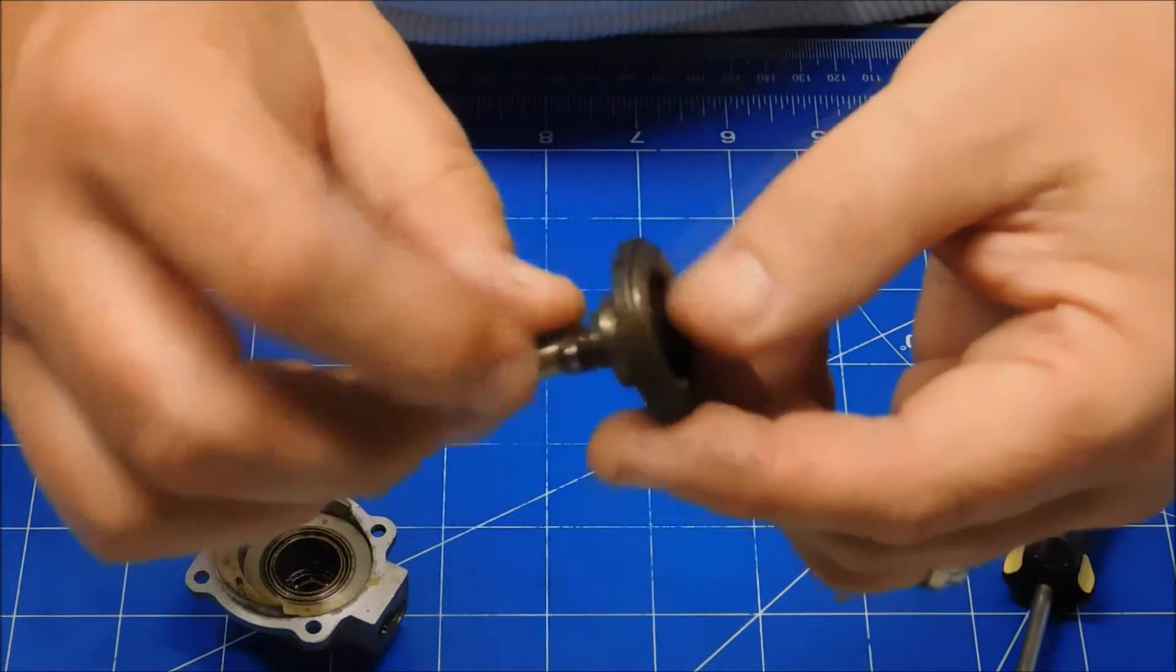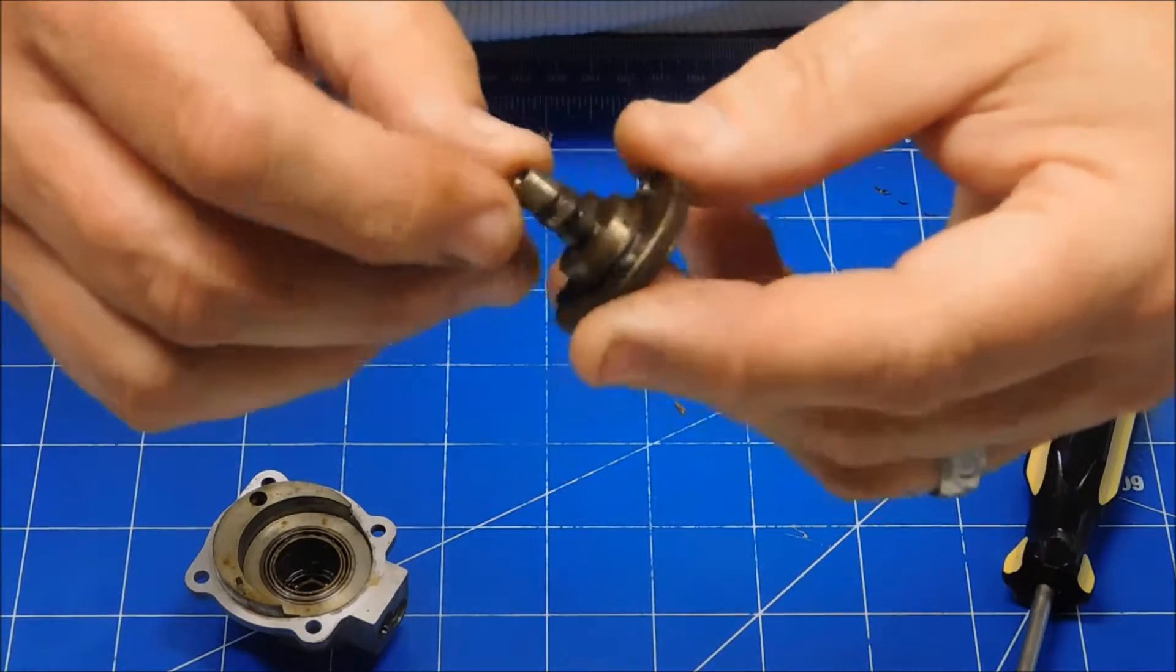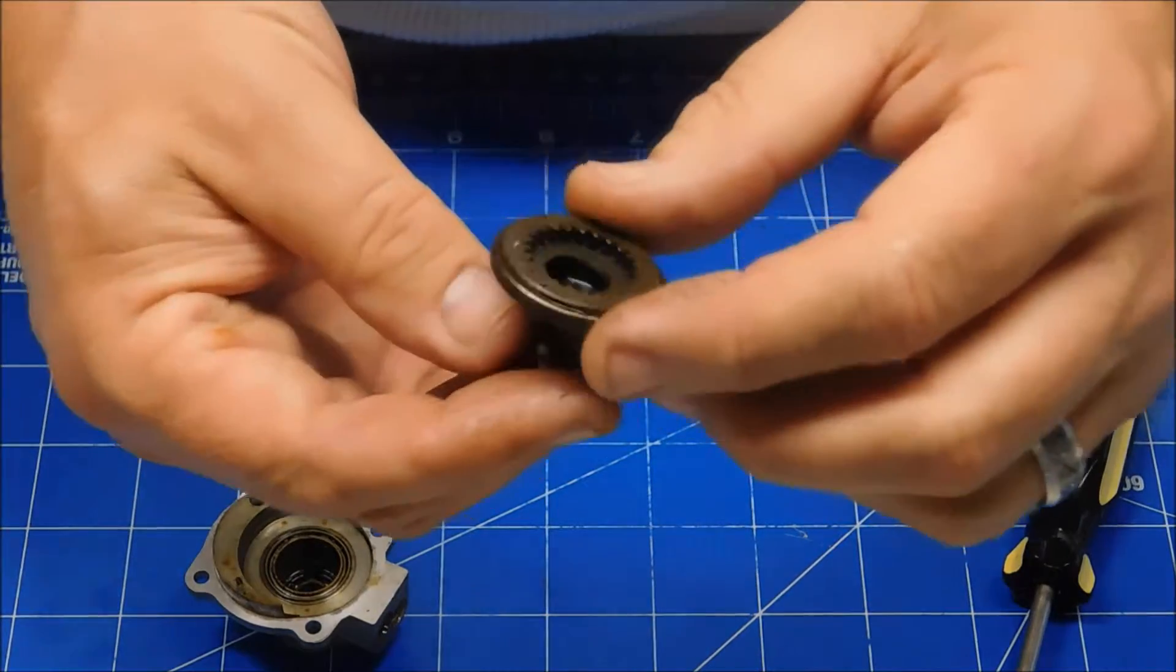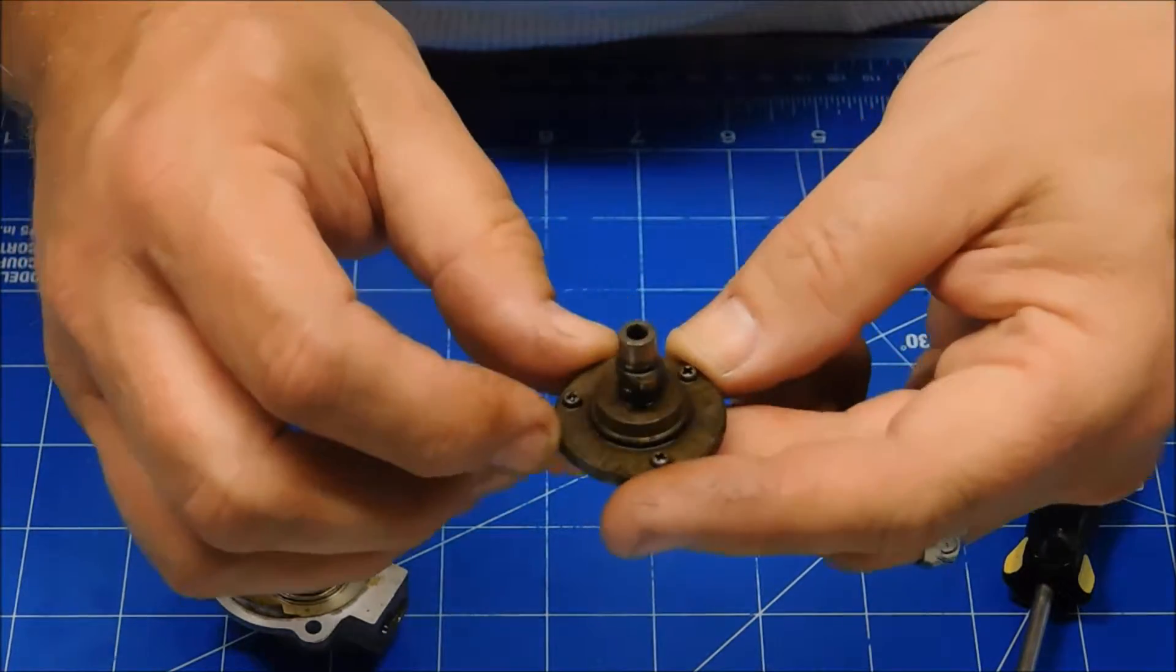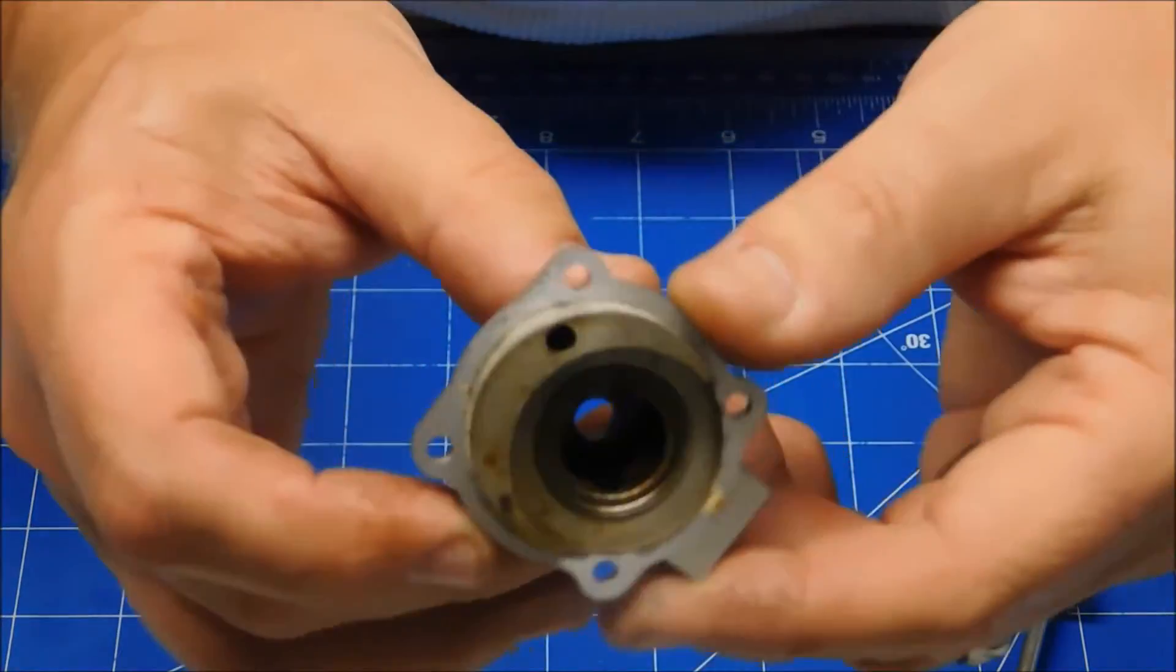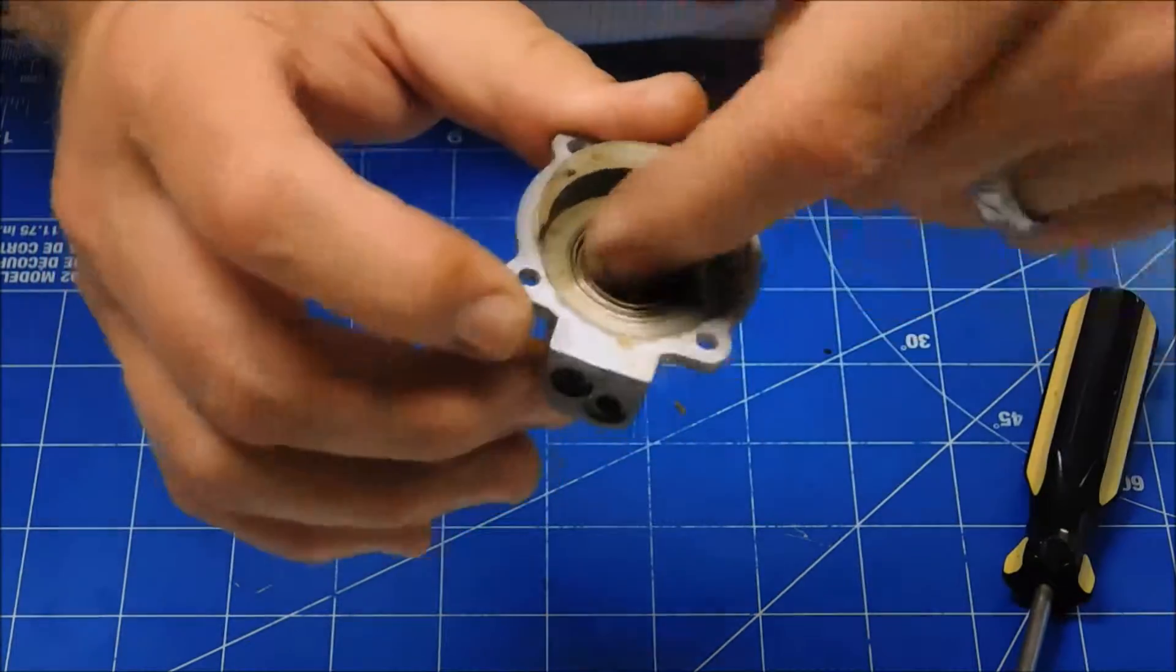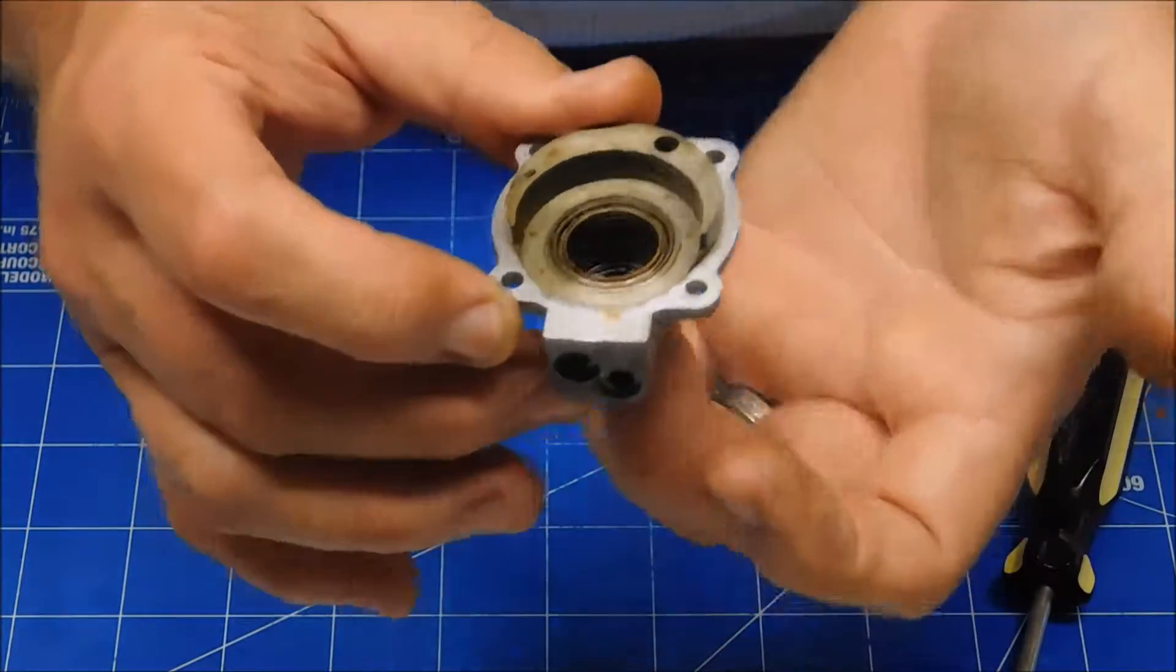This is the timing gear. So this is where the cam lobes are and I don't see any damage to this at all. It looks like it's in pretty good shape. A lot of this stuff is just going to get soaked in LA's Totally Awesome Cleaner. But if you look in here, there's a bearing here and there's a bearing back in here.